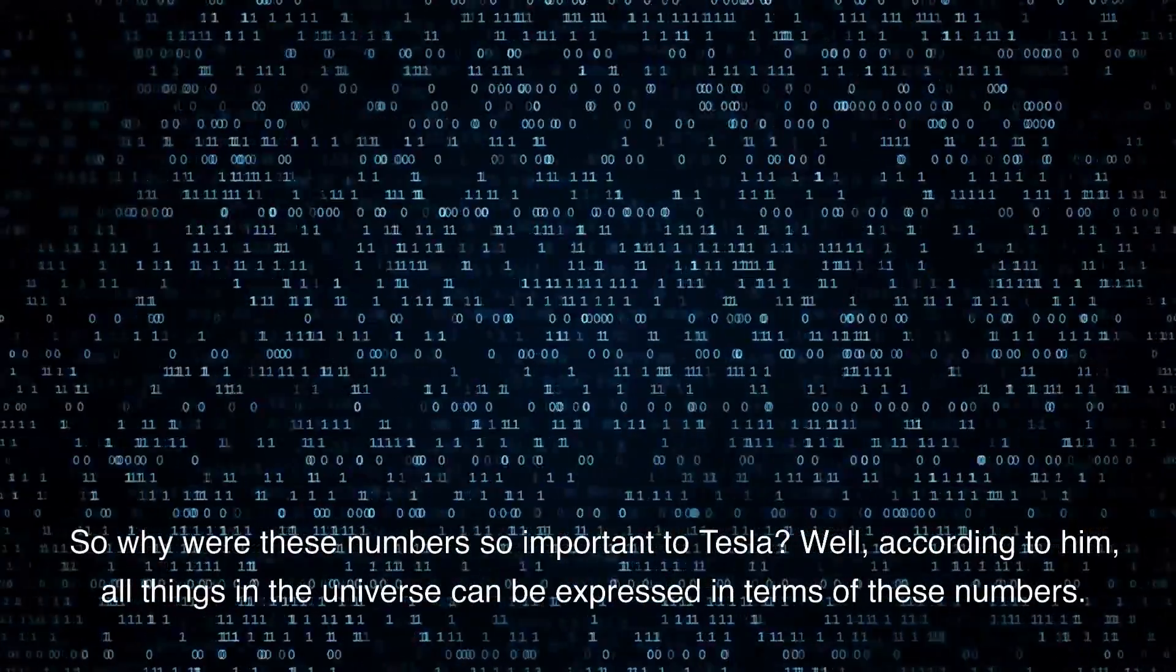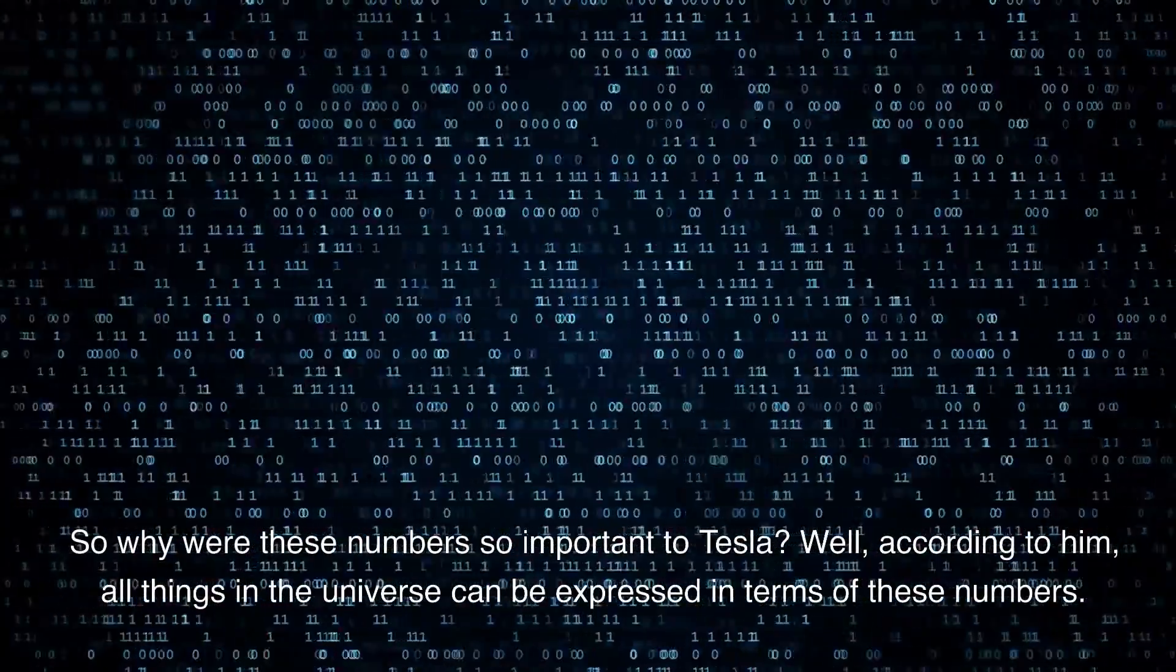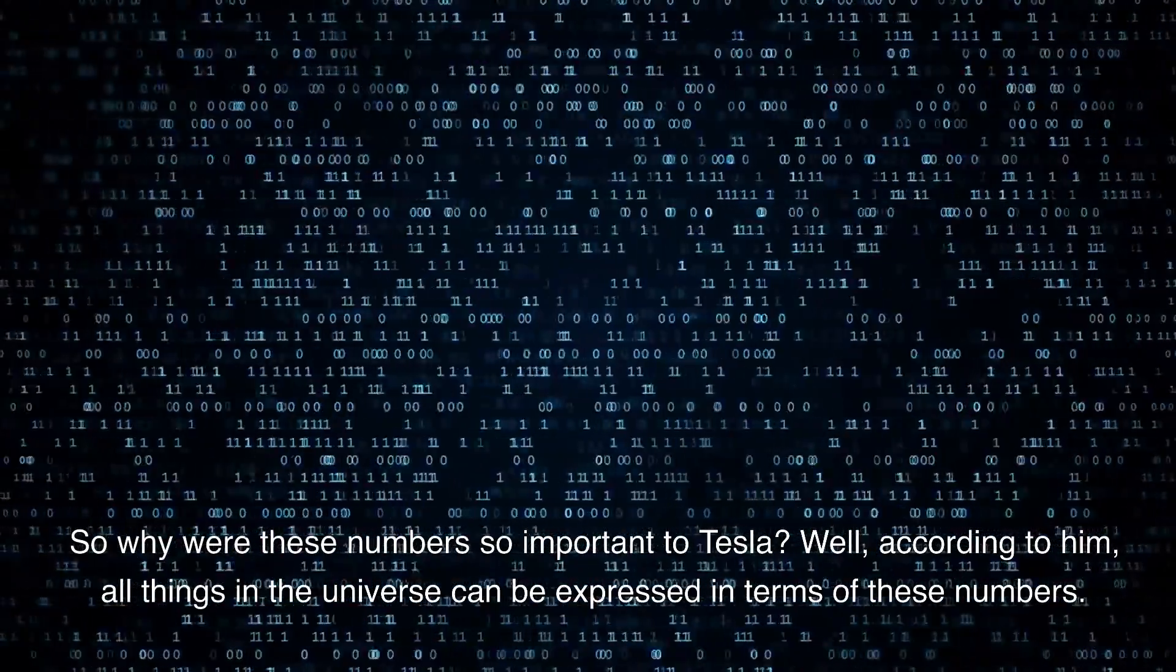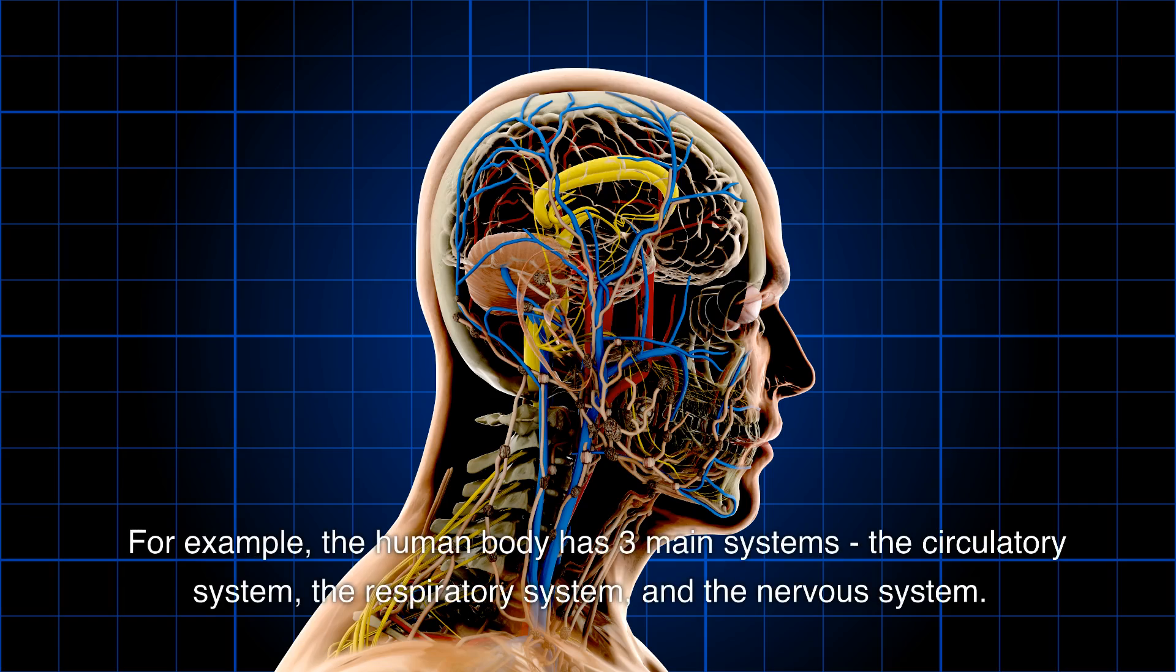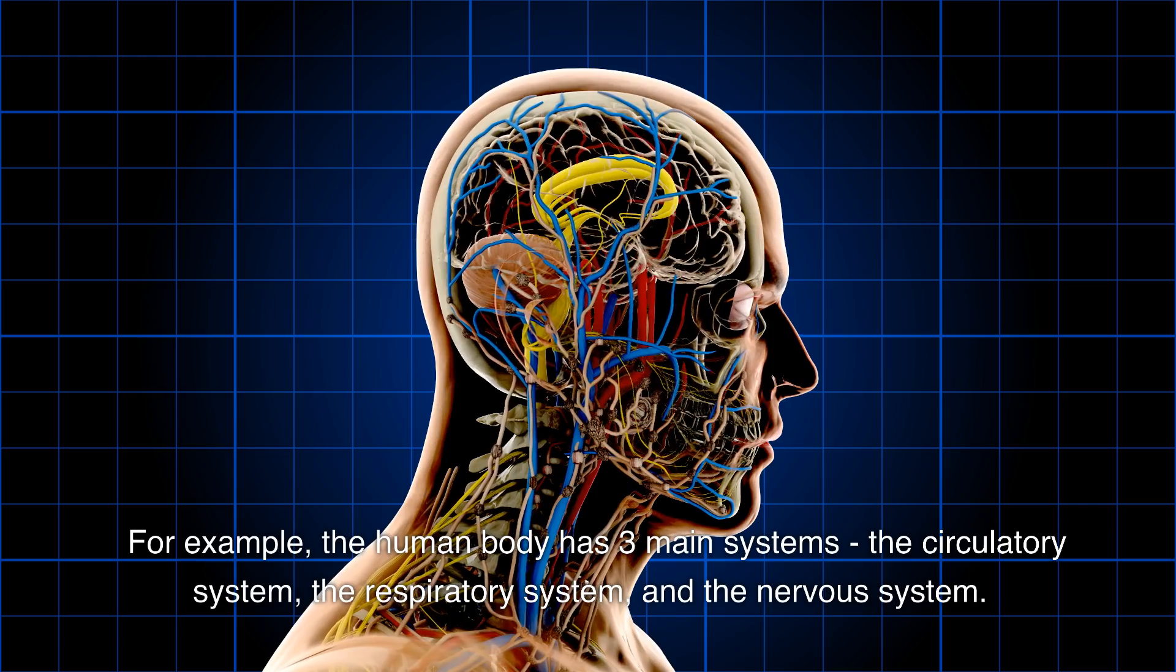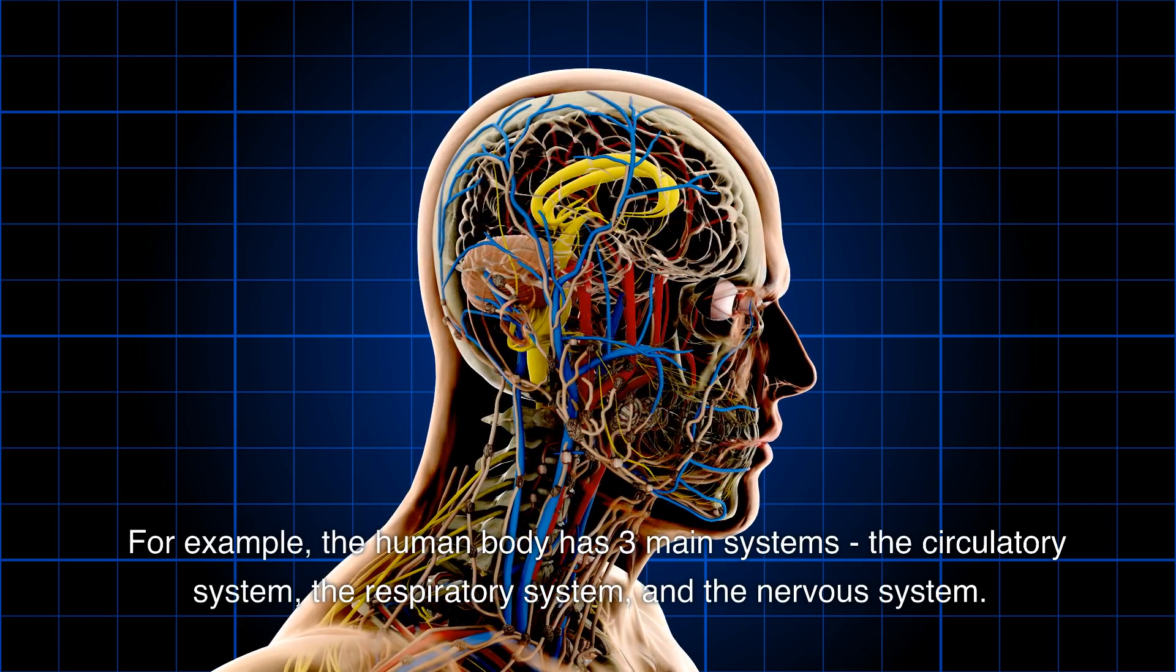So why were these numbers so important to Tesla? According to him, all things in the universe can be expressed in terms of these numbers. For example, the human body has three main systems: the circulatory system, the respiratory system, and the nervous system.